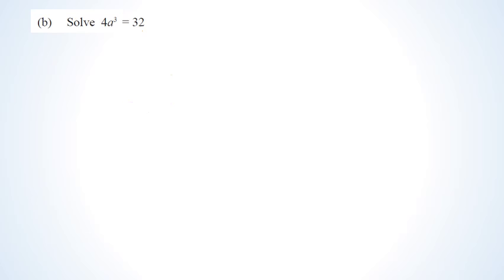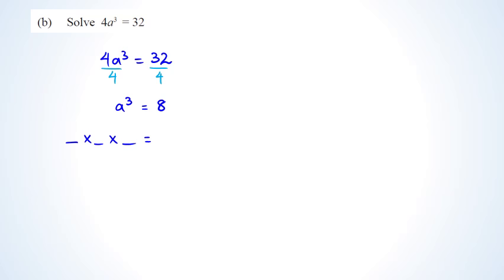Next question: we have to solve 4a cubed equals 32. The first thing I want to do is divide both sides by 4, and I end up with a cubed equals 8. I'm looking for a number that, when multiplied by itself 3 times, equals 8. You might already know the answer: a equals 2.